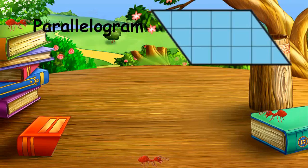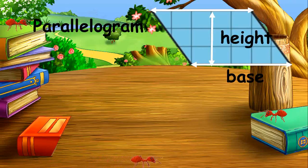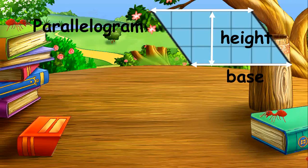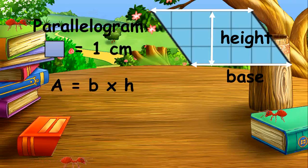Before we take the area of a parallelogram, let's first find out its base and height. A parallelogram has the same properties as a rectangle — they have two pairs of parallel sides. The area of a parallelogram is the space enclosed by two pairs of parallel lines. Since a rectangle and a parallelogram have similar properties, the area of a parallelogram equals base times height, just as a rectangle uses length times width.